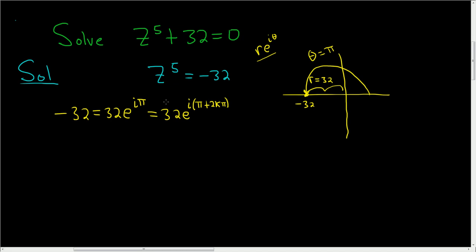We're looking for z to the fifth equals negative 32. Taking the fifth root of both sides, we get negative 32 to the one-fifth, which is 32 to the one-fifth e.